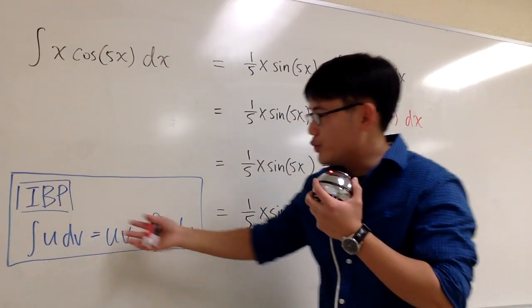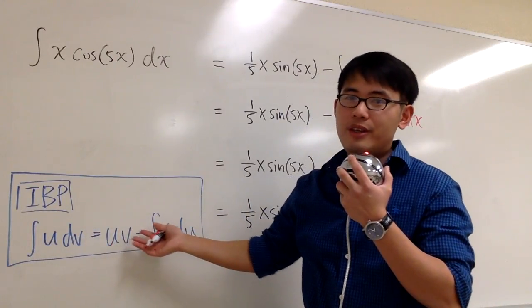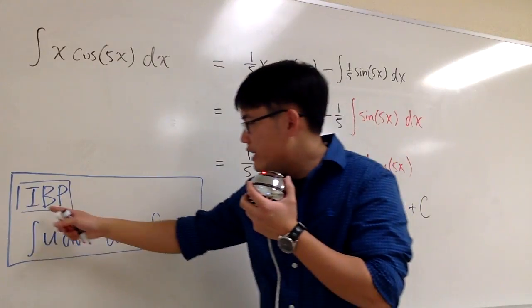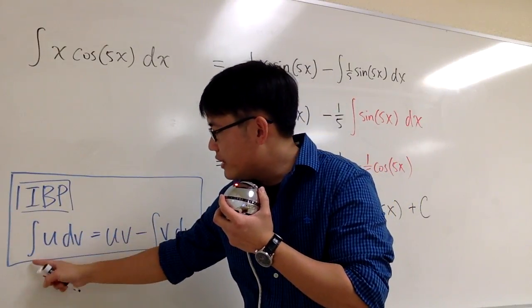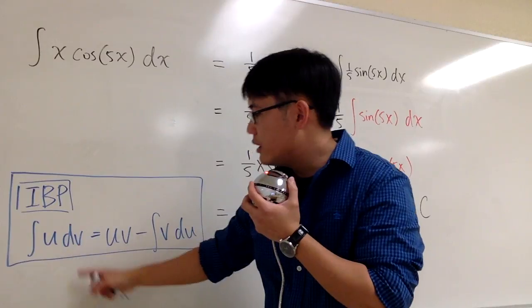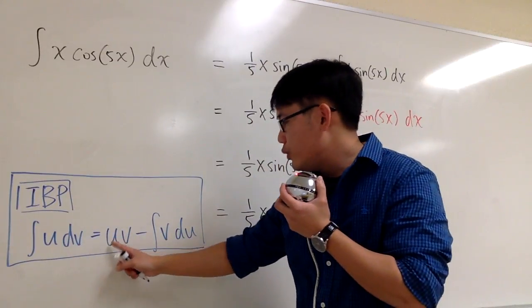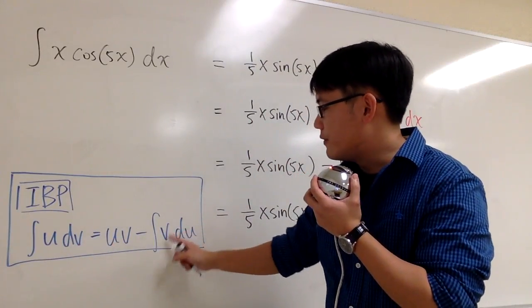But it's okay, because we also have another tool called the integration by parts. The integration by parts says if we have the integral in the form of u dv, then we can get uv minus integral of v du.